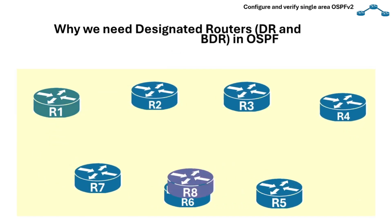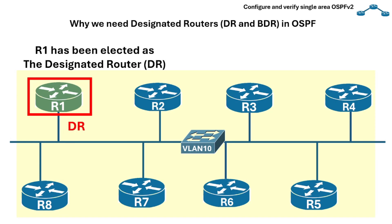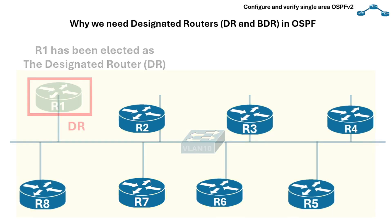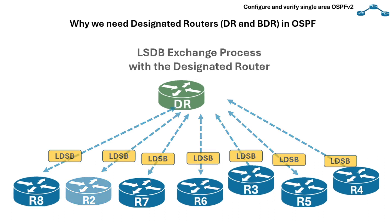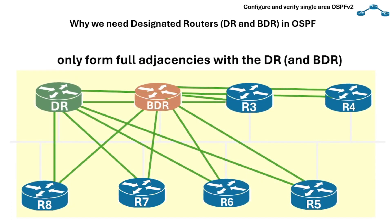To fix this, OSPF uses a designated router, or DR, and a backup designated router, or BDR. The DR is the main point for LSDB exchanges and LSA flooding. Other routers only form full adjacencies with the DR and BDR, instead of with everyone else. This keeps the network efficient, reduces duplicate traffic, and prevents unnecessary flooding.